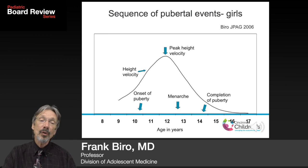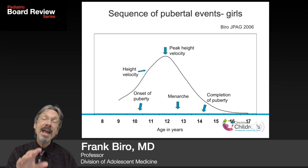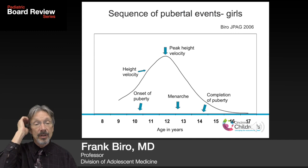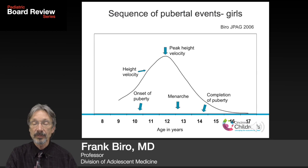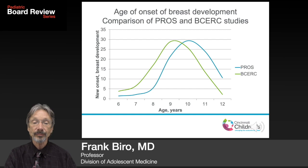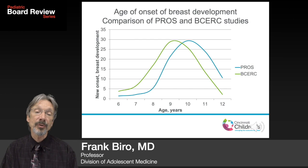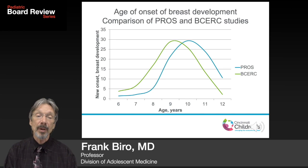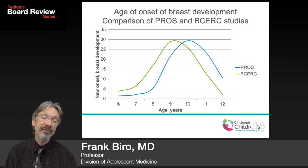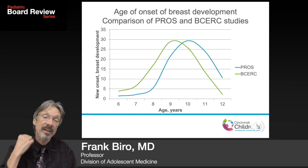Ovulation is not included in the girls' pubertal chart because it represents full maturation of the hypothalamic-pituitary-ovarian axis with a biphasic system. A study from Pediatric Research in Office Settings (1997) compared to data from Breast Cancer and Environment Research Centers (2012) shows that the age of onset of breast development in white non-Hispanic girls has decreased by almost an entire year.